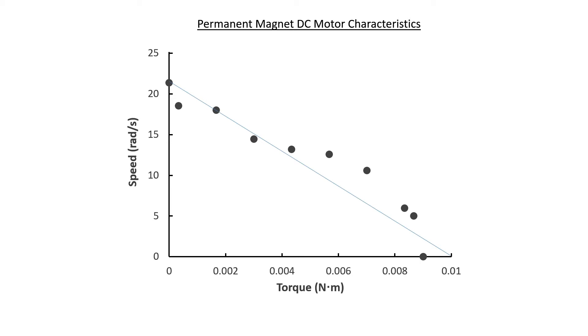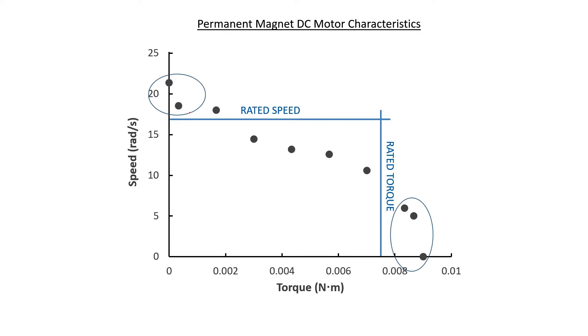If you go and buy a motor, sometimes you would see something called the rated speed and the rated torque. Looking at this graph, there are two danger areas with the motor. If a motor operates at a speed that's too high, it can fly apart. If a motor operates at a very high torque — recall that torque is proportional to current — then the current is very high through the windings, they can get hot due to resistive losses, and the motor can burn up. Therefore motors have a rated speed and a rated torque, and you don't normally want to operate a motor beyond either of those limits.